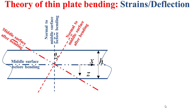Since the deflection is considered small — the first assumption taken into consideration by the theory of thin plate bending — theta x will be considered small. Now, we will try to determine the strain at a point, for example the point depicted here in blue.